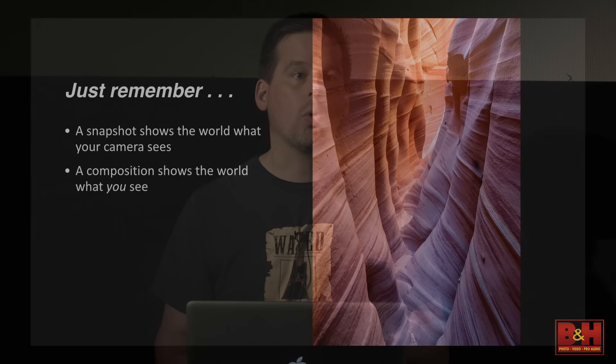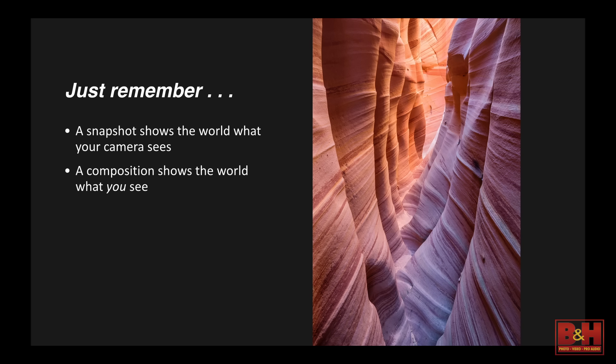Just a few reminders about composition to close. A snapshot shows the world what your camera sees. But when you create a successful composition, you show the world what you see — and that's why composition is so important. It's your way of imposing your artistic vision on the scene. I encourage everyone to study photographic composition and the composition of the great painters. Think critically about it. When you see something, ask yourself: why do I like this? Why don't I like it? If you can see what a master painter has done and recognize the compositional tricks they were using to make it work, nothing can stop you from doing it. It may take some practice, and it takes a while to really develop these skills and start seeing the world in terms of shape and line and color — but once you can see it, nothing will stop you from doing it. Thank you very much.